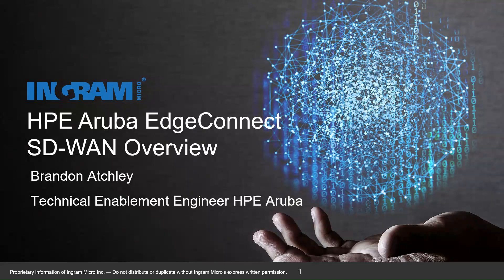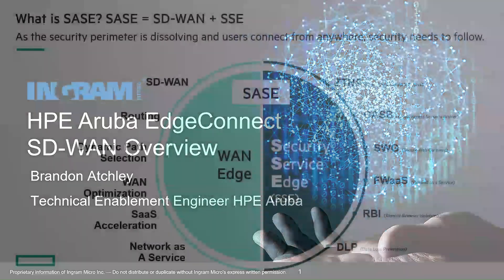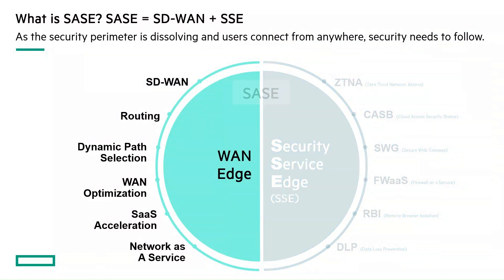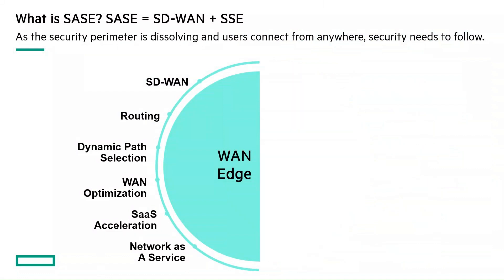Let's start off by talking about SASE. SASE is the combination of an SD-WAN and an SSE Security Services Edge solution being used together. In this video, however, we're only going to talk about the SD-WAN — the left side of this picture — which includes things like routing, dynamic path selection, WAN optimization, and SaaS acceleration.